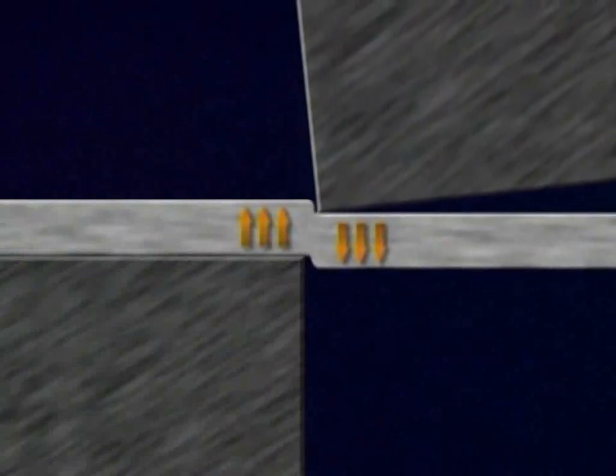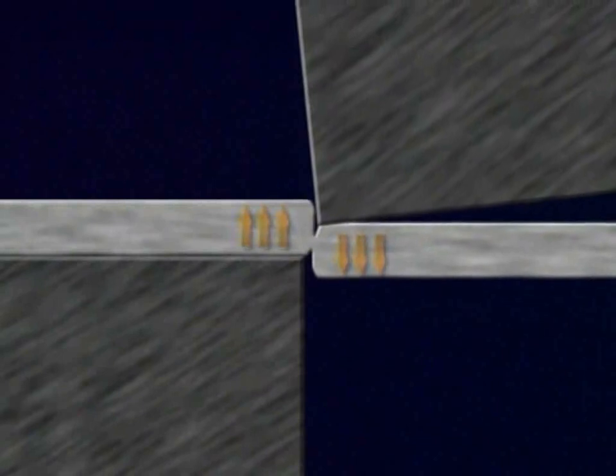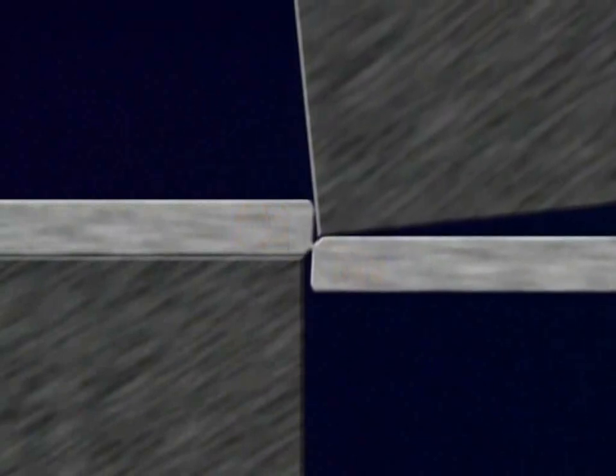As the blades come together and contact the workpiece, they partially penetrate the material. This builds up opposing forces in the stock. A crack or tear called the slip plane then develops on both sides of the material, separating the stock.